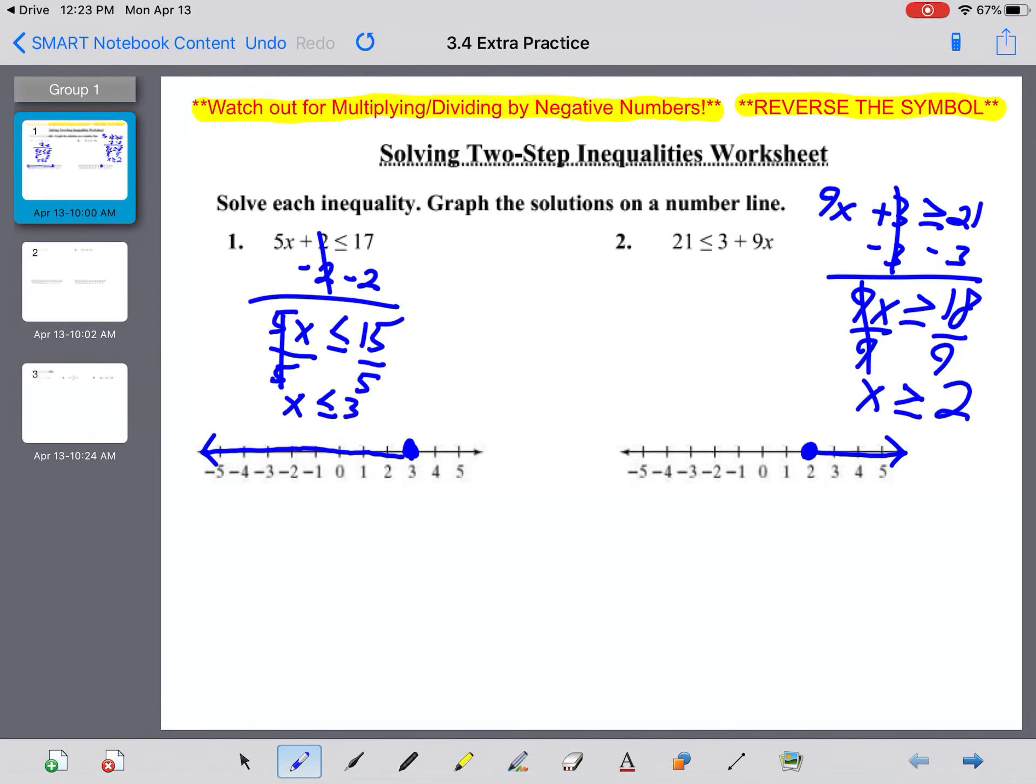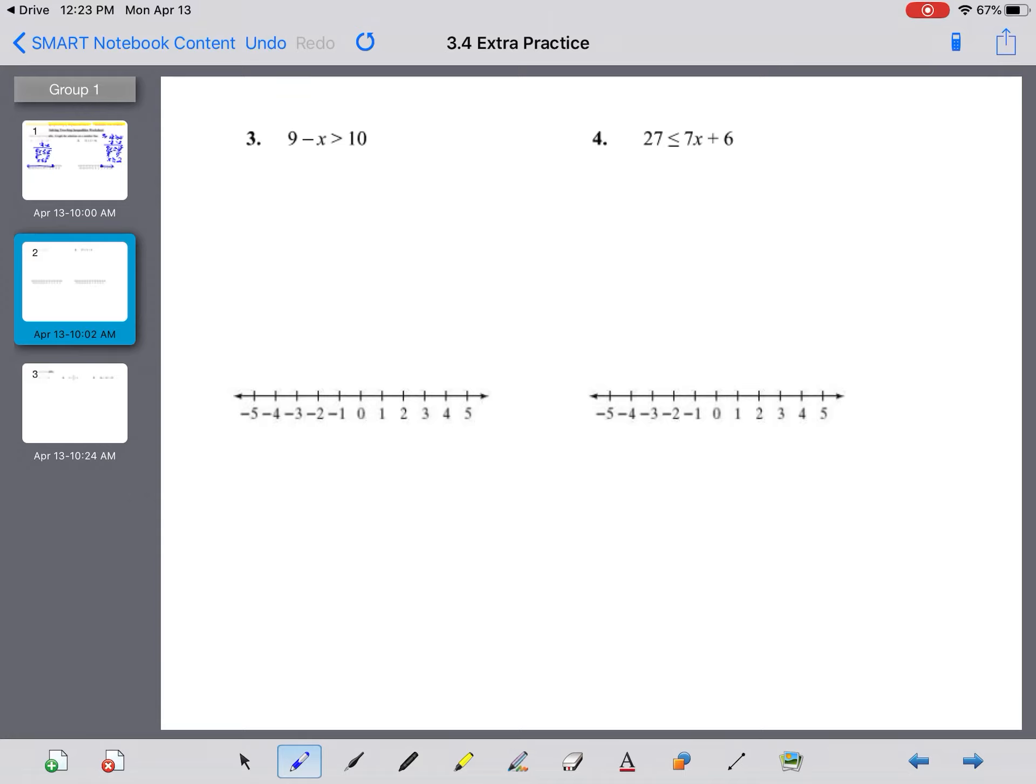Number 3, little tricky. This is 9 - x is greater than 10, but this is a positive 9, so to get rid of it we need to subtract. We get -x is greater than 1, but really this is a negative 1, so I'm going to divide both sides by -1. Dividing by a negative number means that we flip the inequality symbol over, so x is now less than -1. Put an open circle on -1; arrow goes left.